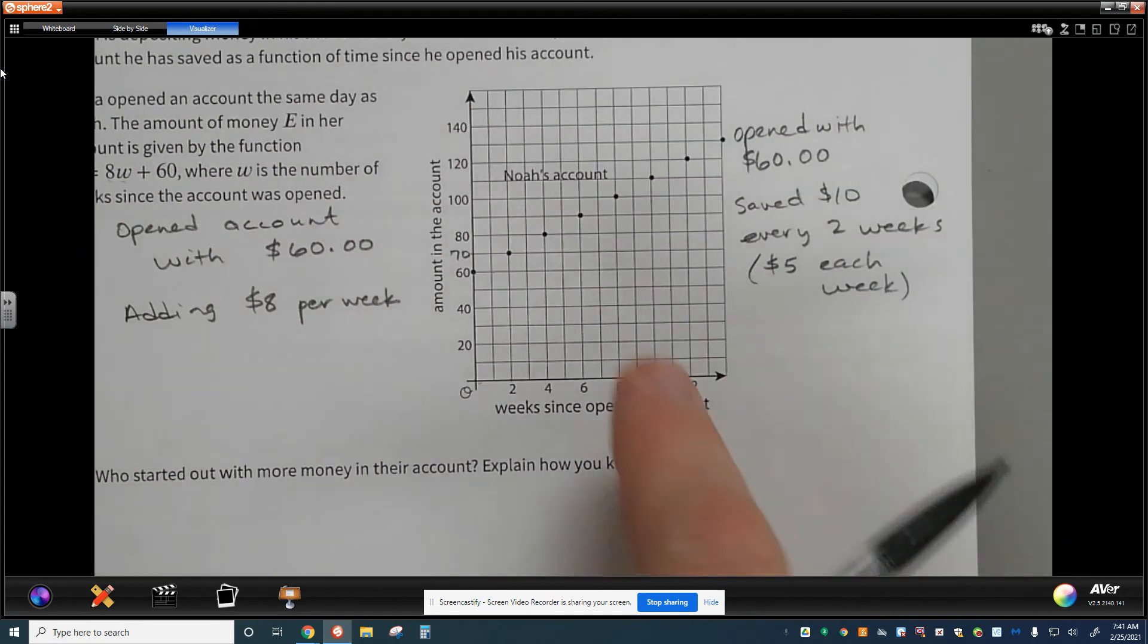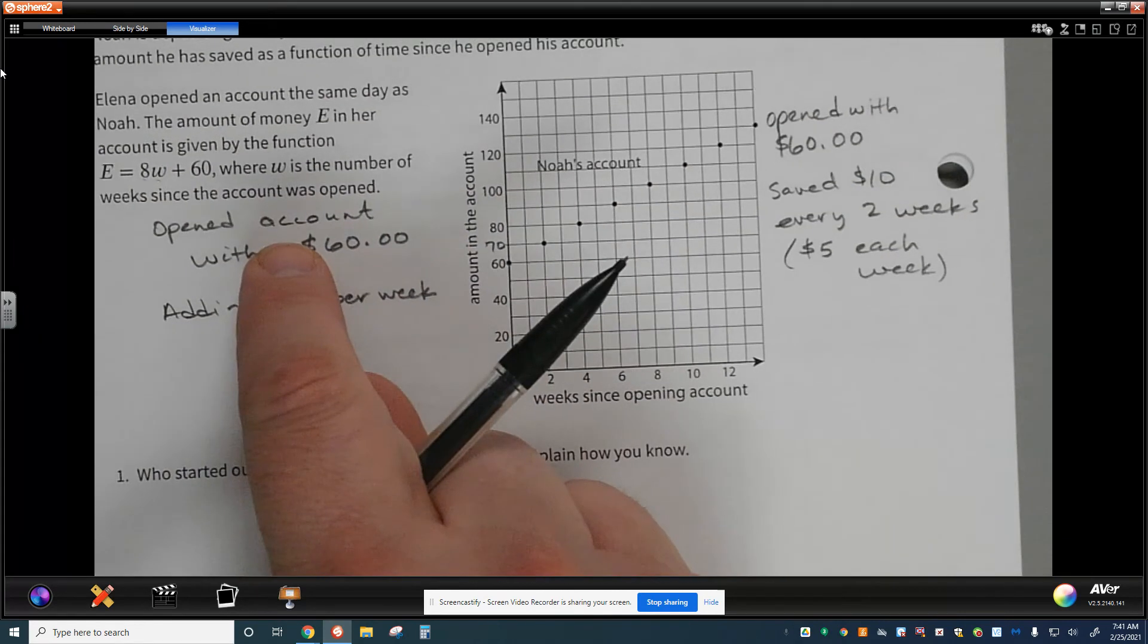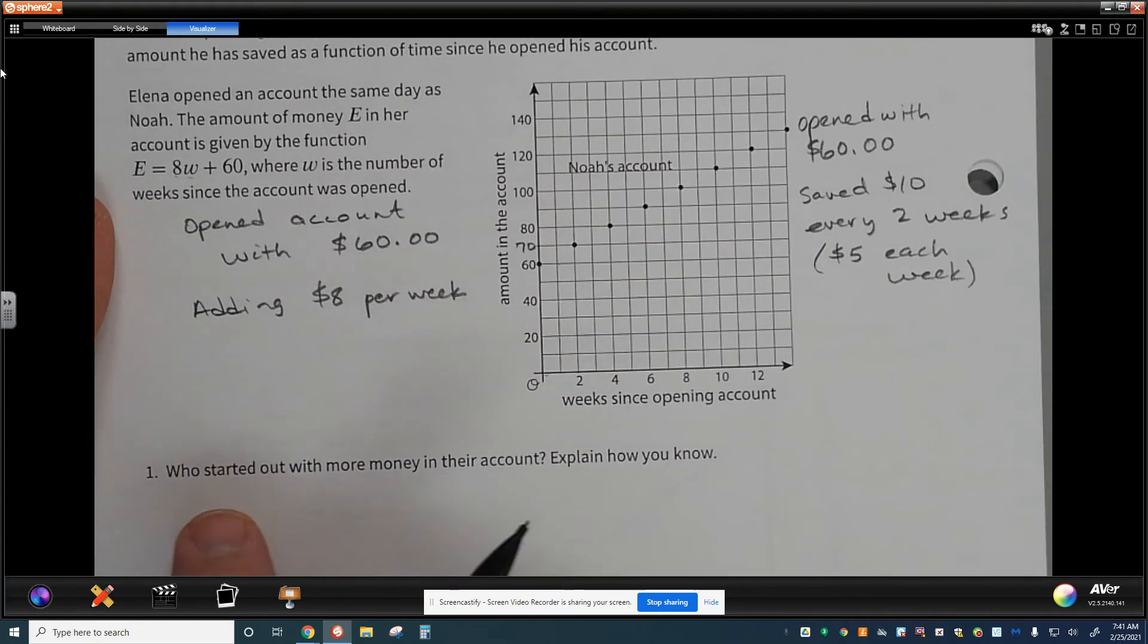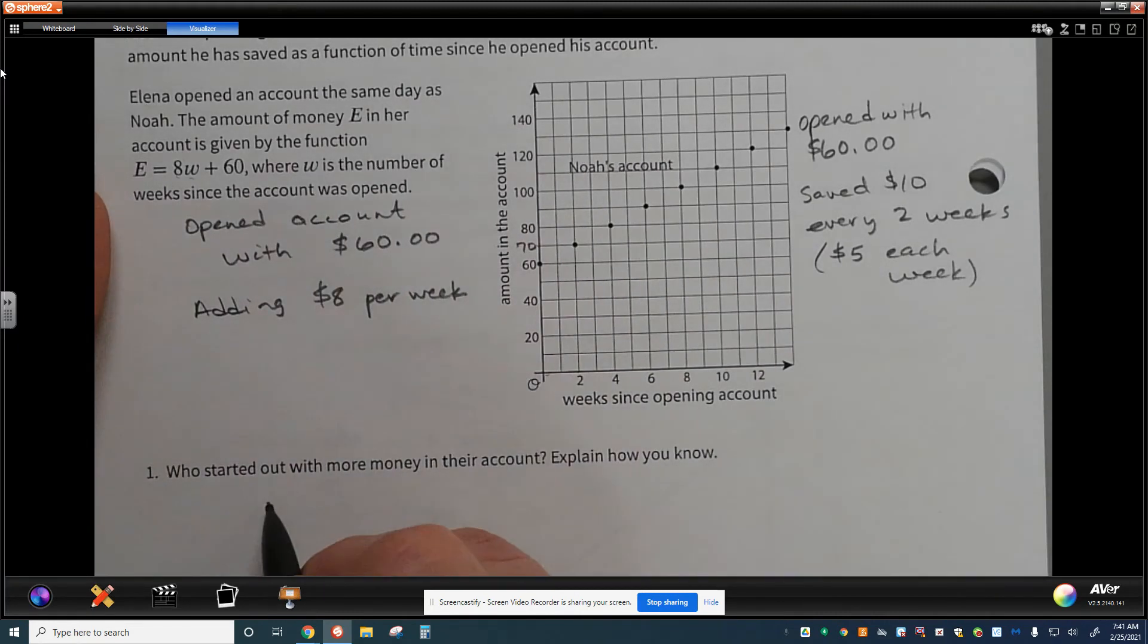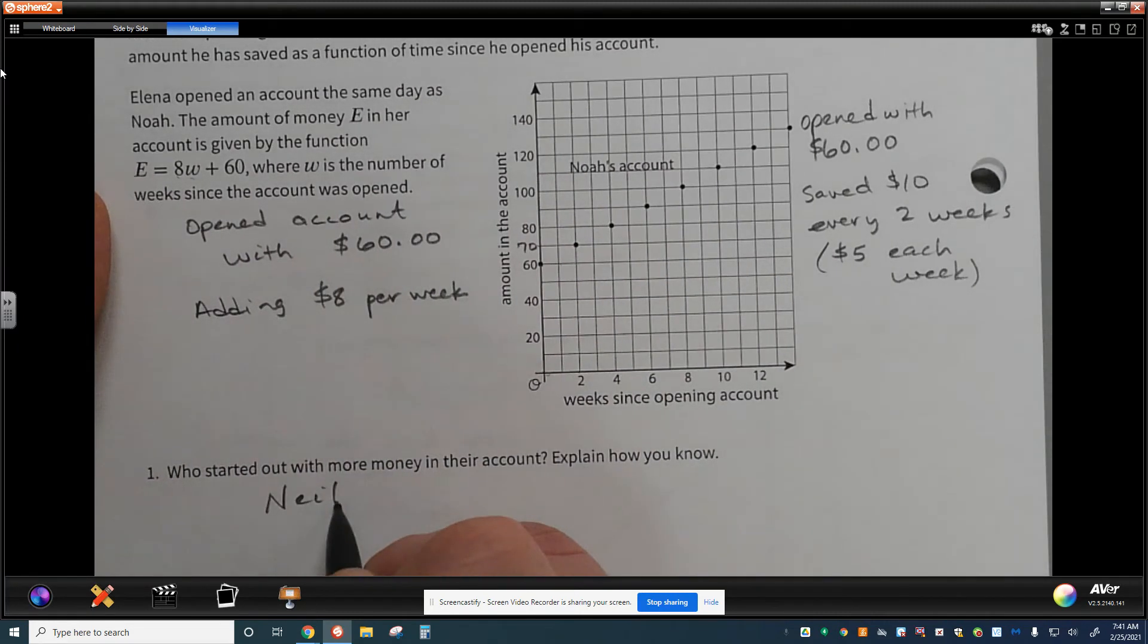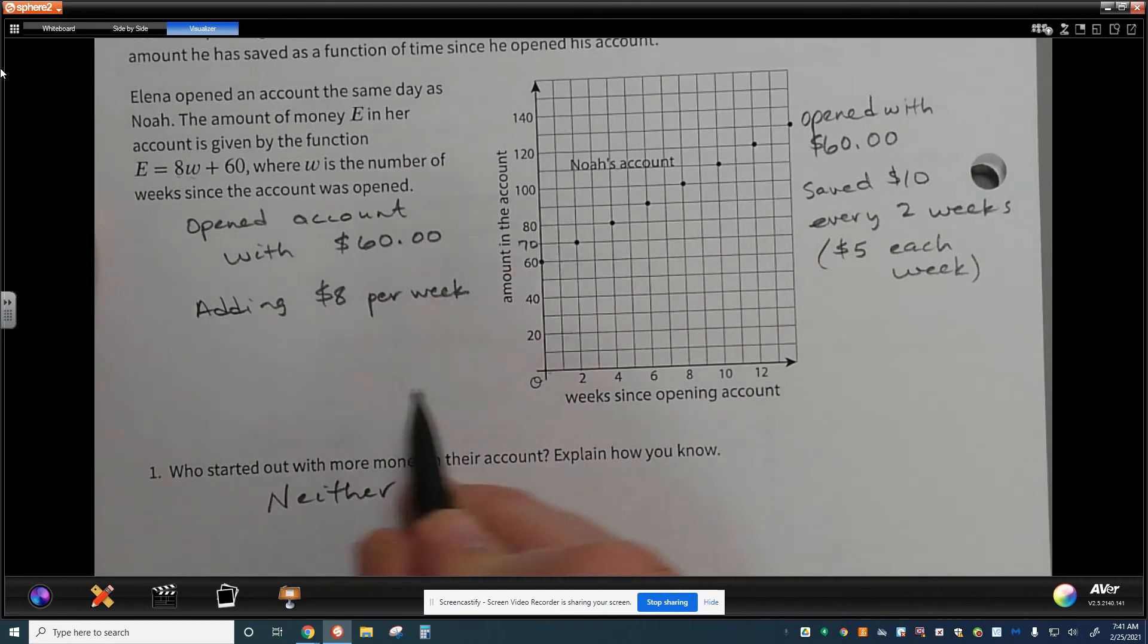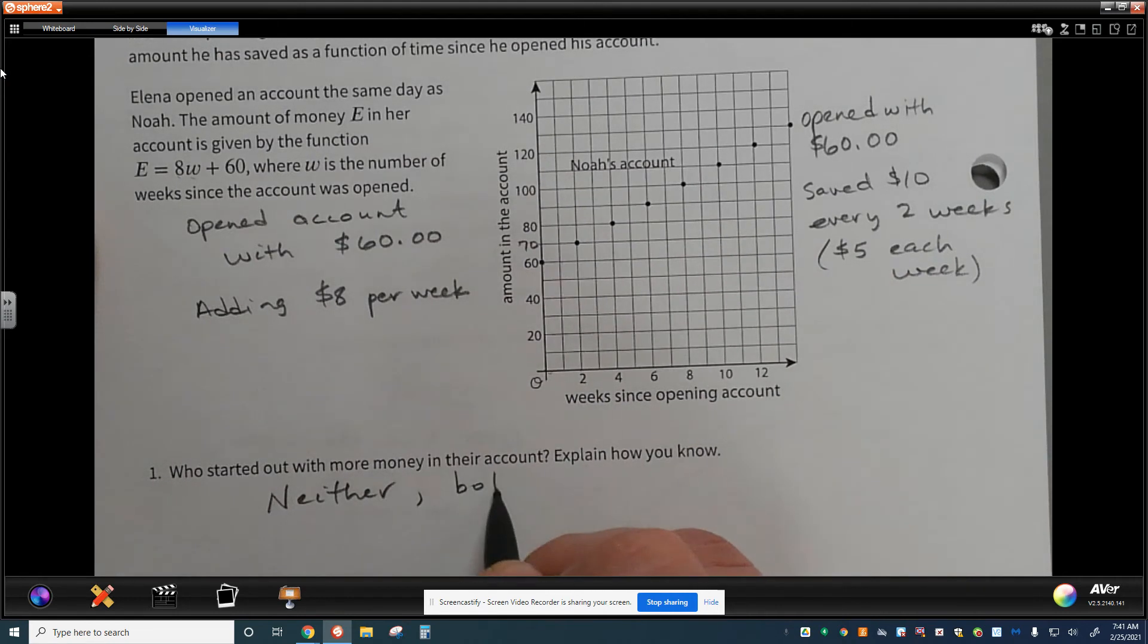Now, by going through the graph and going through the equation, understanding what the pieces and components are and what they mean helps me to understand who is actually saving more money, how much they started with, and just kind of what patterns were at with this. So who started out with more money in their account? Neither. And the reason for that is because both started out with $60.